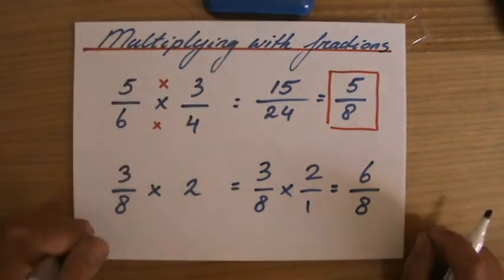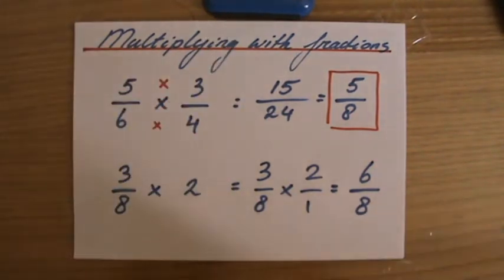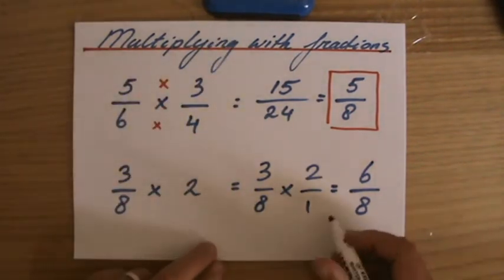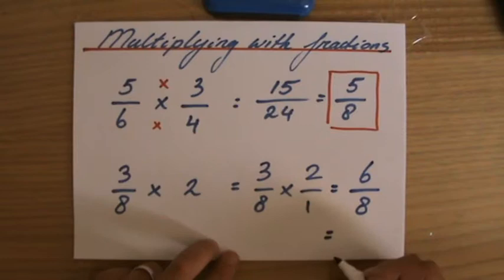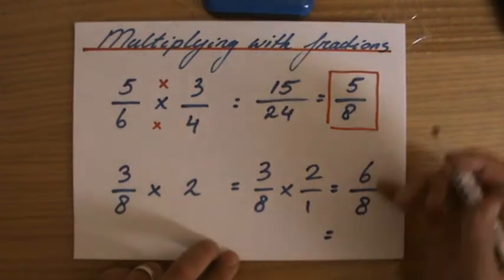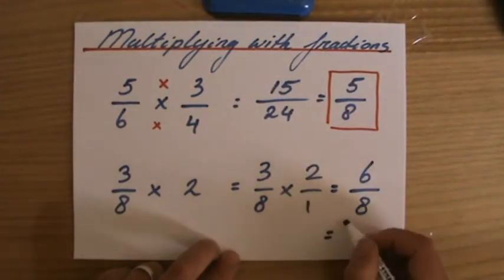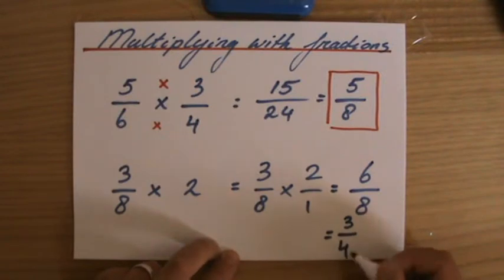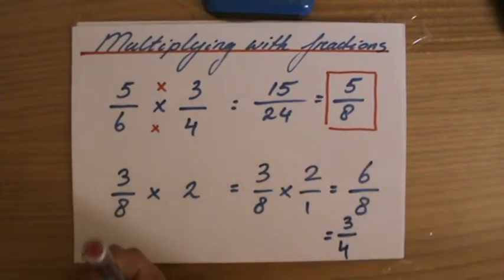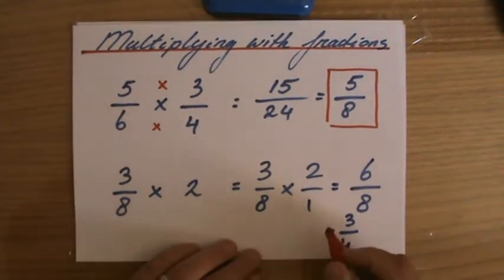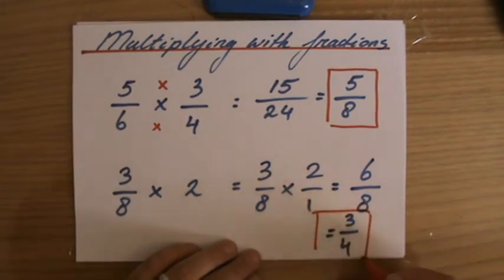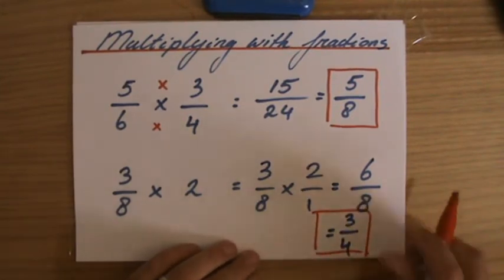So I have 6 over 8. At that point they're both even, so I take out a factor of 2. That gives me 3 over 4, and that is it. 3 over 4 cannot be further simplified — it really is its simplest form.